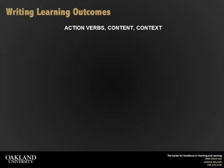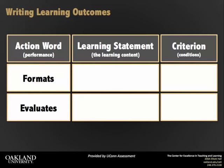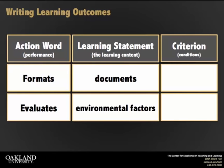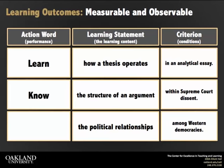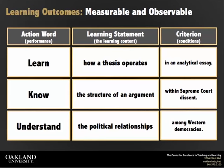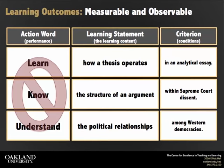We can think of this in three categories: action word, learning statement, and criterion. Since learning outcomes are measurable and observable, the action words used must also be measurable and observable. Words like learn, know, and understand are not observable actions.